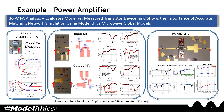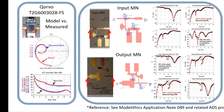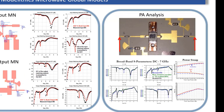In this example, we go over a 30-watt power amplifier analysis. On the left-hand side, we first compare measured data for a Corvo transistor device against the Modelethics nonlinear model available in our Corvo GAN library. Next, we compare simulations of the input and output matching networks against measured data. Finally, on the right-hand side, we perform a complete analysis of the power amplifier combining the input and output matching networks along with the nonlinear transistor model, to perform a broadband S-parameter sweep as well as a power sweep. Note the excellent correlation between simulation and measurement for both.